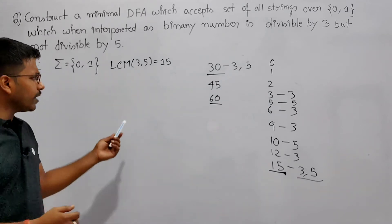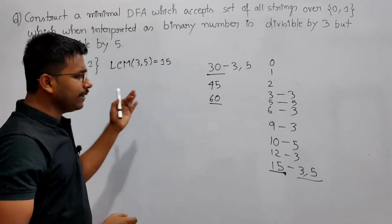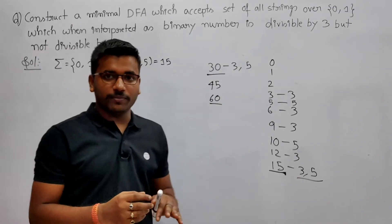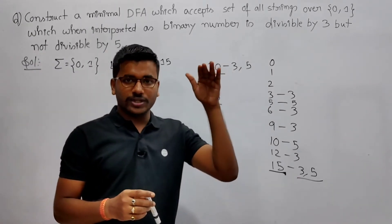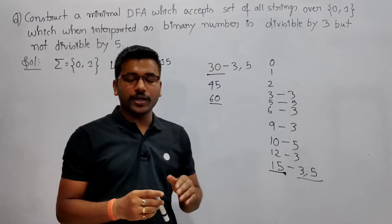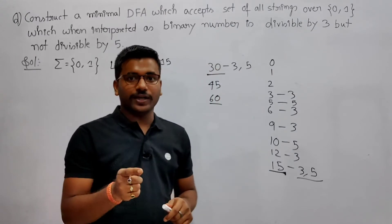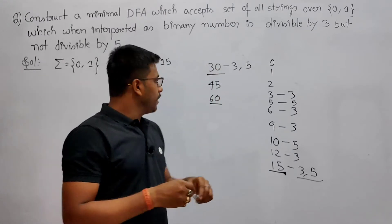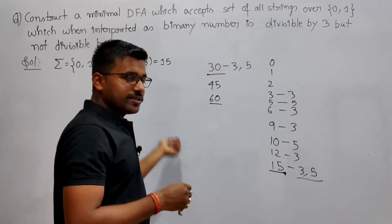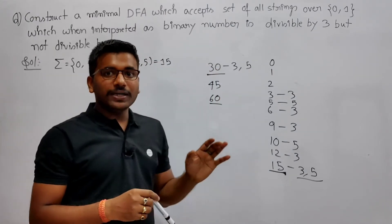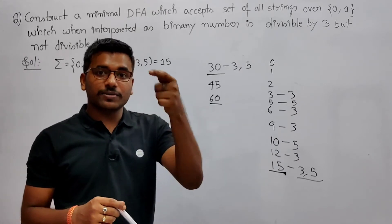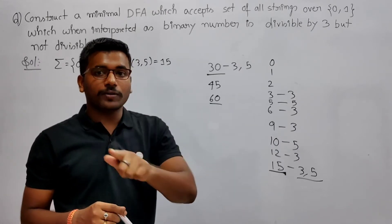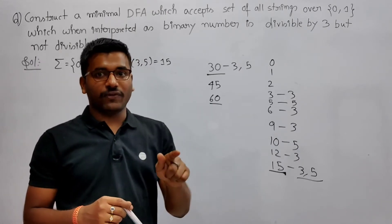So what we will do: we will again construct a minimal DFA which accepts the set of all strings divisible by 15. But whenever we construct it, when it is divisible by 15, we will not make that state a final state.